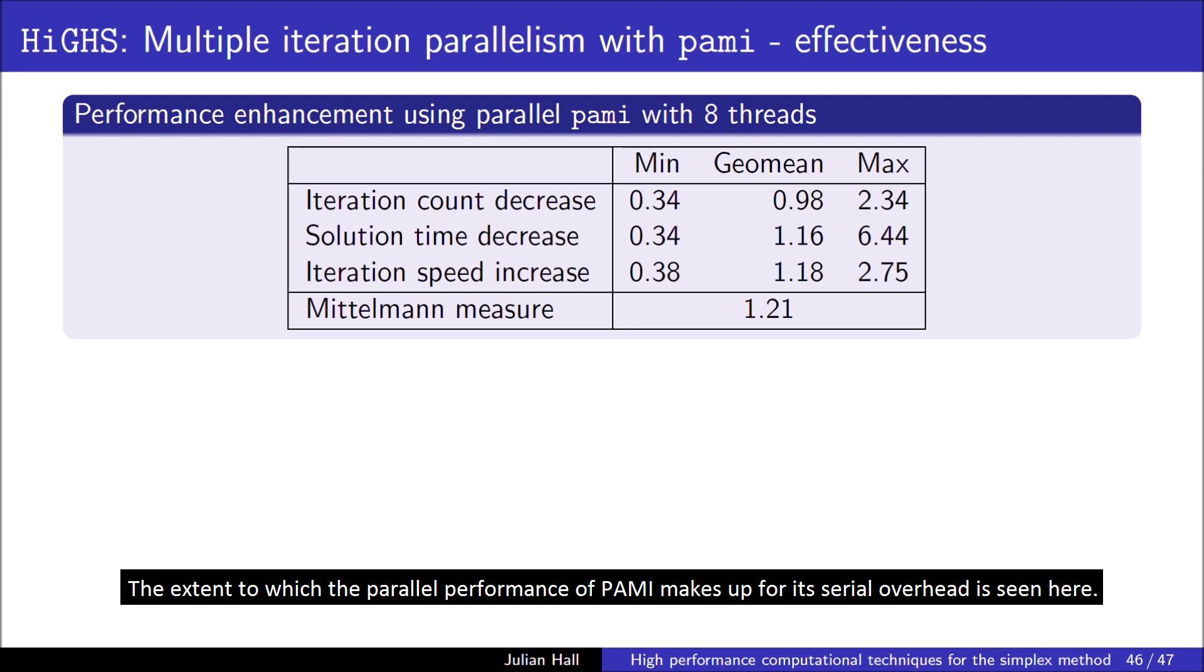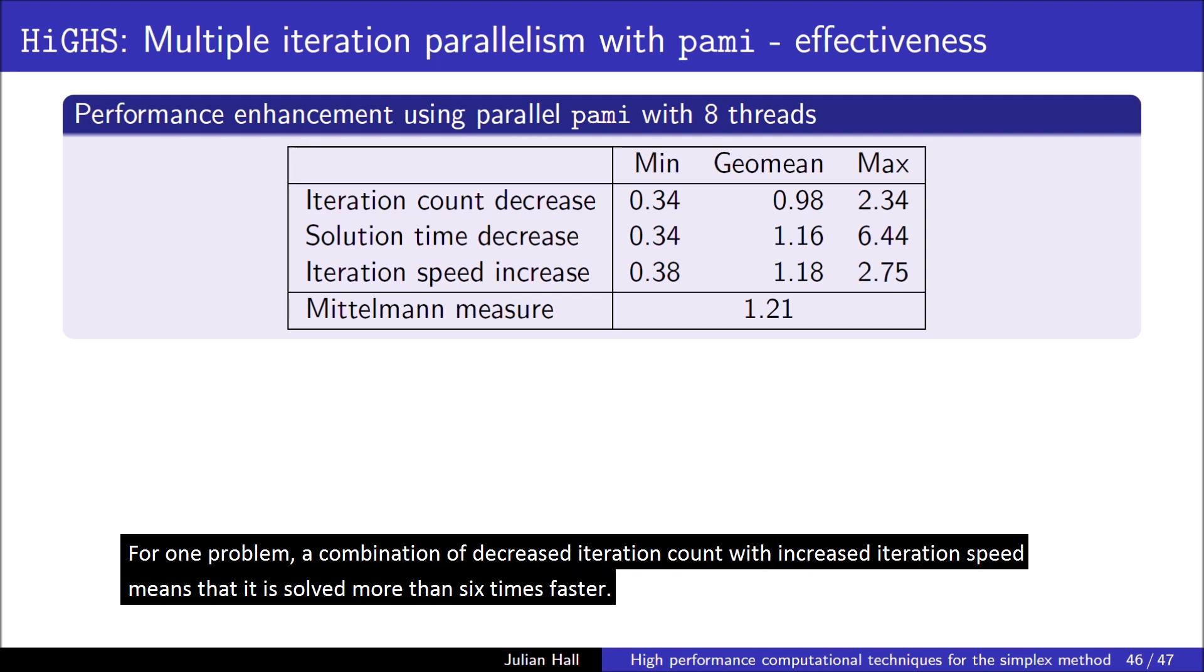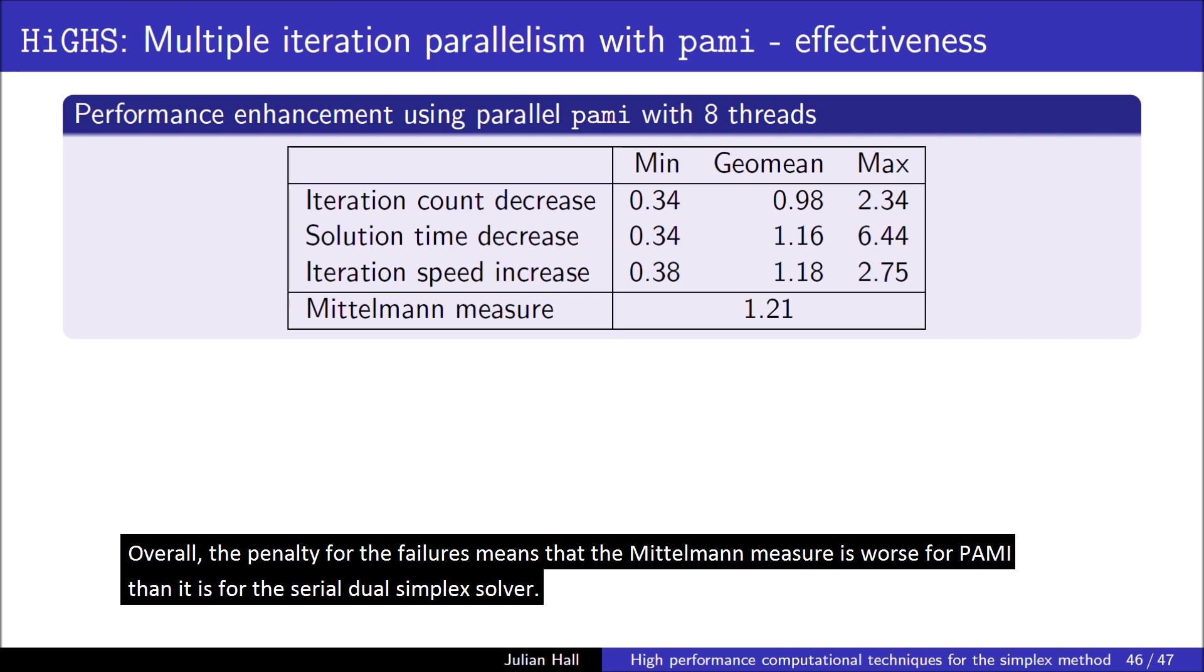The extent to which the parallel performance of PAMI makes up for its serial overhead is seen here. For some problems, it is slower than the serial dual simplex solver, but, on average, it is faster by a factor of 1.16. For one problem, a combination of decreased iteration count with increased iteration speed means that it is solved more than six times faster. Overall, the penalty for the failures means that the Mittelman measure is worse for PAMI than it is for the serial dual simplex solver.